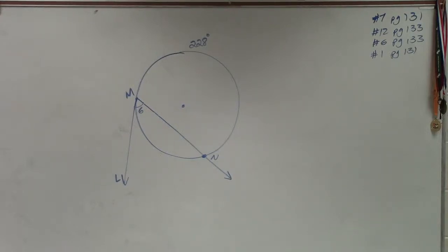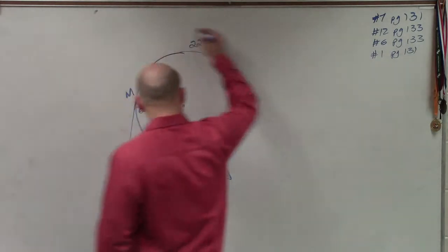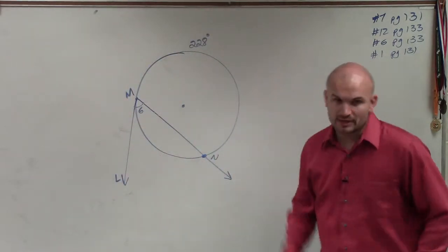When we look at a problem like this, you can see that we have an arc from m to n that is 228 degrees.